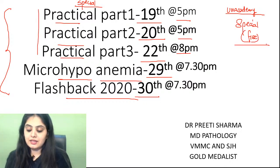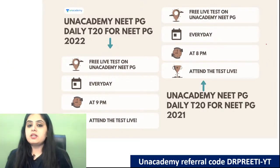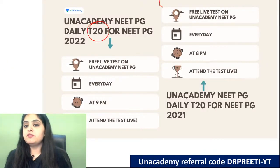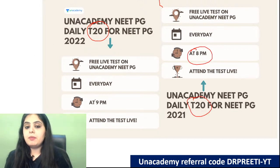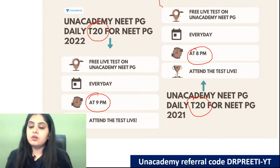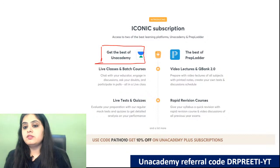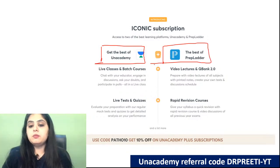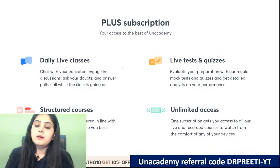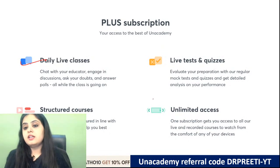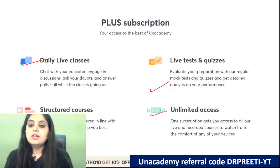The topics include practical pathology in three parts at five and eight o'clock, microcytic hypochromic anemia MCQs on the 29th — very important — and a throwback/flashback session on the 30th of December at 7:30. Also be familiar with the T20 quiz series going on daily on the Unacademy app at eight and nine o'clock, which is free for everyone to attempt and gives you a good insight into your timing and ranks.